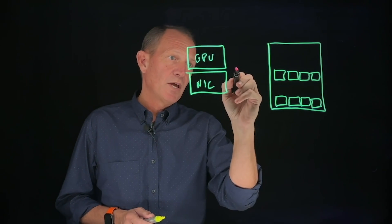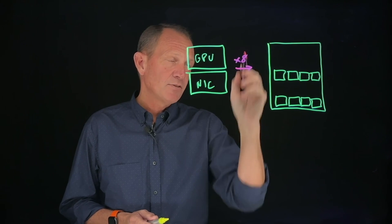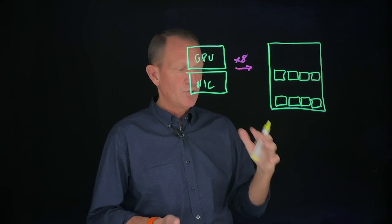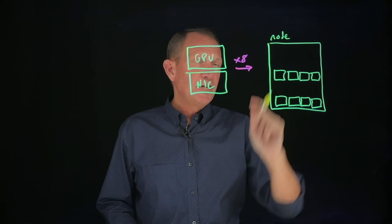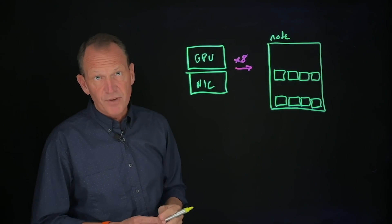We take that and multiply by eight - we put eight of these combinations into what's called a node. Eight GPU nodes are very common right now, supplied from several vendors.